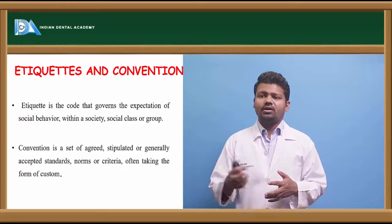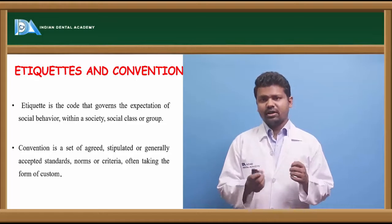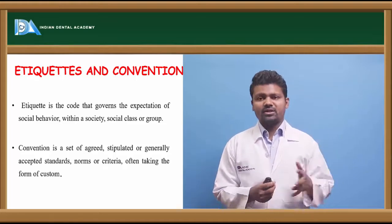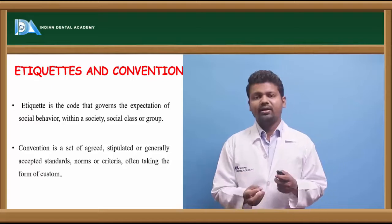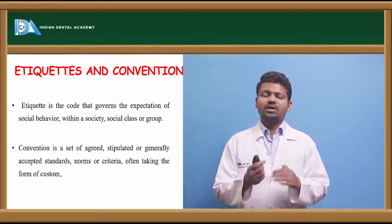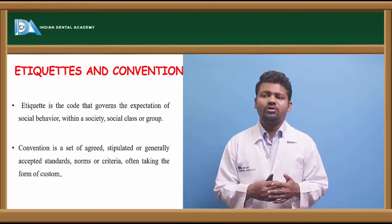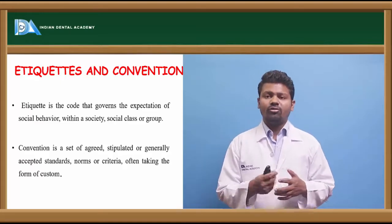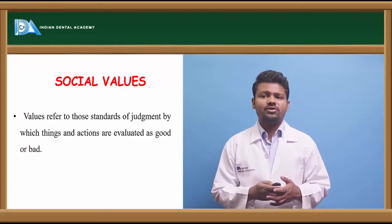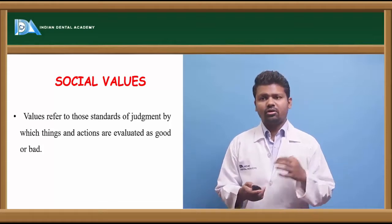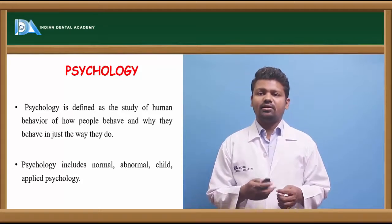In India, many people prefer to eat by hand — so etiquette differs across places. Conventions are a set of agreed, stipulated, or generally accepted standards, norms, or criteria, often rooted in customs. Social values are the standards of judgment by which things and actions are evaluated as good or bad.